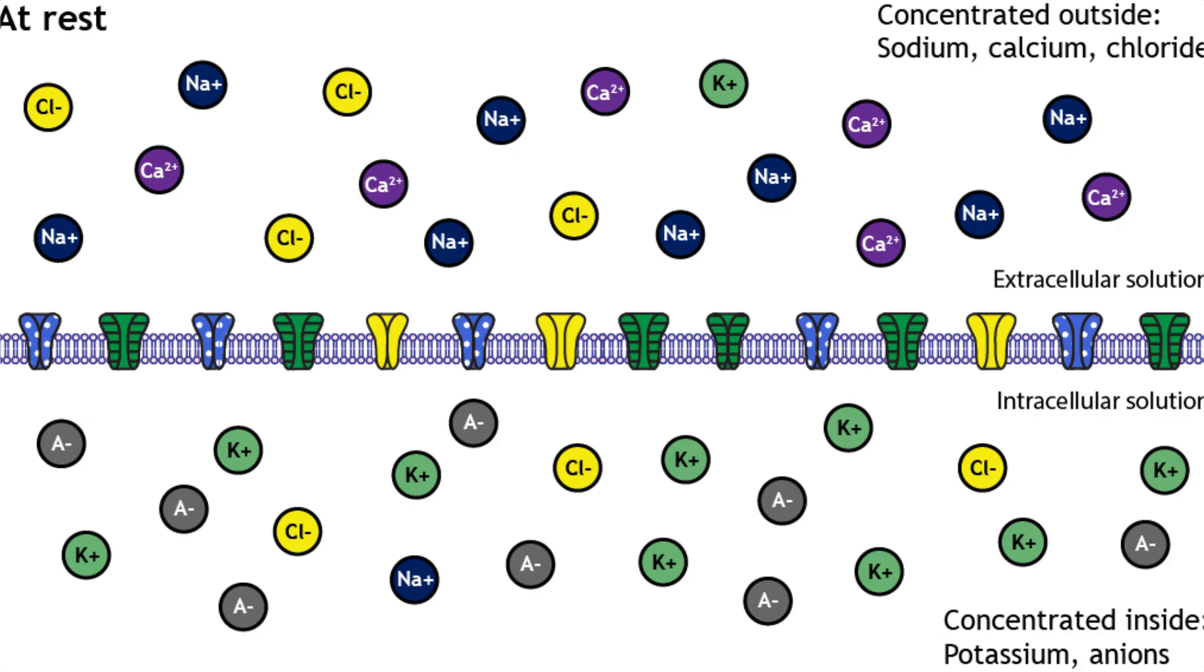The chemical gradients drive the ions from areas of high to low concentration and the electrical gradients attract or repel ions based on the charge. For potassium, or K+, its chemical gradient pushes it outwards, meaning a high concentration is inside compared to the outside, while the negative interior, or the electrical gradient, can pull the potassium back in. And this interplay is really important in determining the resting membrane potential.